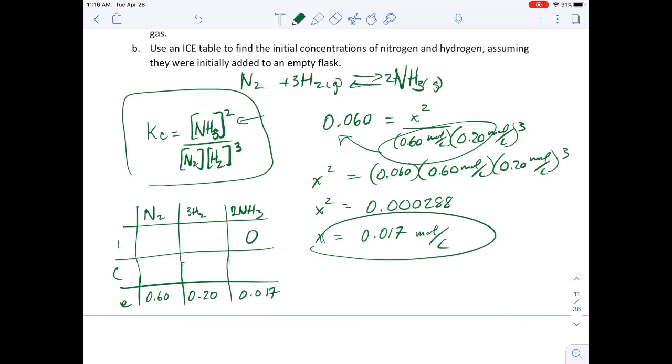If this started at zero and this went up by 0.017, then this will be minus 0.017 times three over one. So I get plus or minus 0.051.